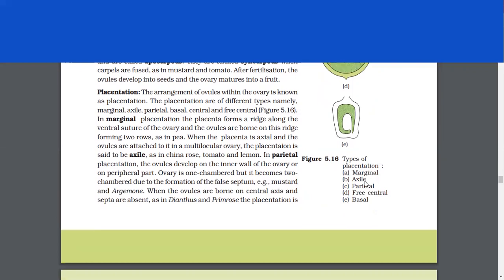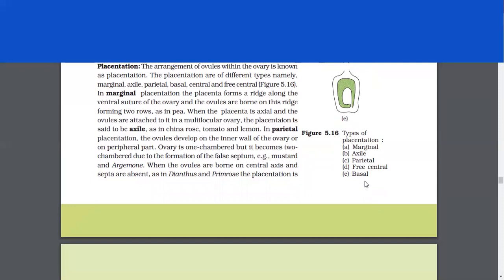Placentation. The arrangement of ovules within the ovary is known as placentation. The placentation are of different types, namely marginal, axile, parietal, basal, central, and free-central. In marginal placentation, the placenta forms a ridge along the ventral suture of the ovary and the ovules are born on this ridge forming two rows as in peas.